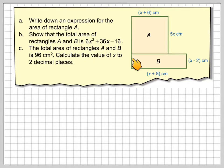Okay, here we have a compound shape made of two rectangles. It says write down an expression for the area of rectangle A, and then it says show that the areas of rectangles A and B is 6x² + 36x - 16.